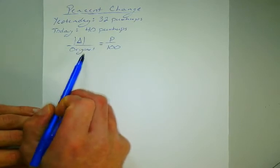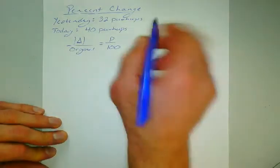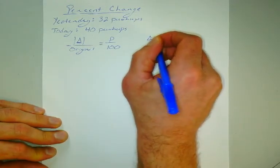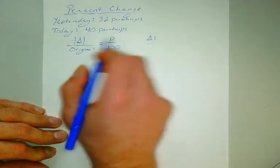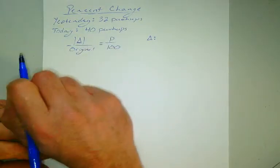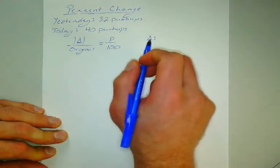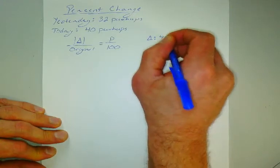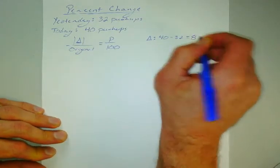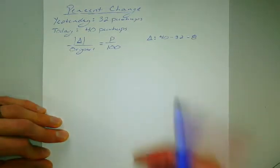First thing we need to do is figure out what our change is, our delta. So delta, which is a fancy way to say change, is just the difference between the two values. We'll do today's minus yesterday's. It really doesn't matter what order we do it in because we're taking the absolute value. So 40 minus 32 is 8. My change from yesterday is 8 push-ups. I did 8 more today than I did yesterday.